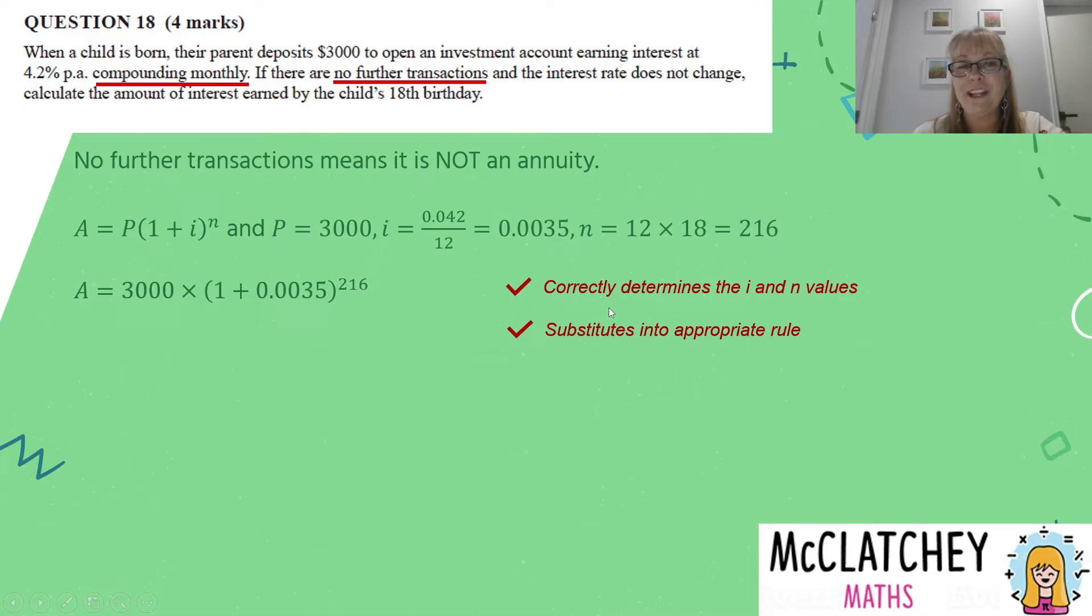Ideally, you want to be getting this done correctly. Our next step is to work that out on our calculator. And we get that amount at the end is $6,380.79. That's what our compound interest formula has worked out. So we need to read the question and see if that's what the question's asking us to do. If you read it here, it says calculate the amount of interest. This is not the amount of interest. This is the amount at the end, which includes the original deposit. The difference between these two is the interest.